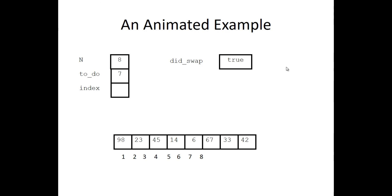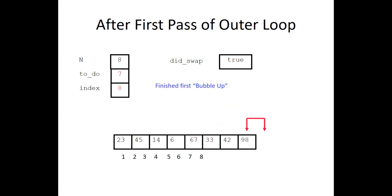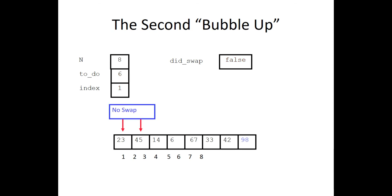Here is another animated example with an index shown and an indicator of whether swapping occurred. There are eight elements, and 98 is clearly the largest. Comparing the first two elements, 98 and 23: 98 is largest, so they are swapped. Then 98 and 45 are compared at index 2 — swapped again. This swapping continues until 98 reaches its final position, finishing the first bubble-up with 98 at the end. In the second iteration, no swap is needed in the first step since 98 is already placed.